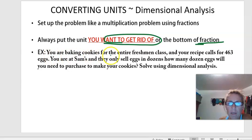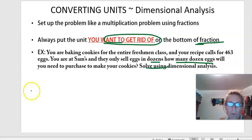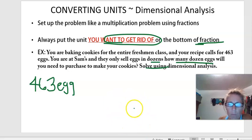Our question says: you are baking cookies for the entire freshman class and your recipe calls for 463 eggs. You are at Sam's and they will only sell eggs in dozens. So now we need to figure out how many dozens we're going to need to purchase to make our cookies. We're going to solve using dimensional analysis. We always start with what we're given — we are given 463 eggs — and we need to convert that to dozens.